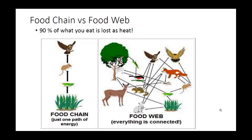When we talk about energy, we touch on food chains and food webs. Here's a food chain, and here's a food web — kind of easy to see the difference. A food chain is one link to another with no branches. A food web looks like a spider web.